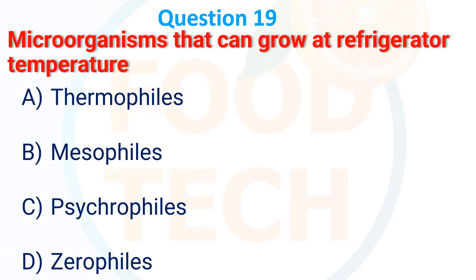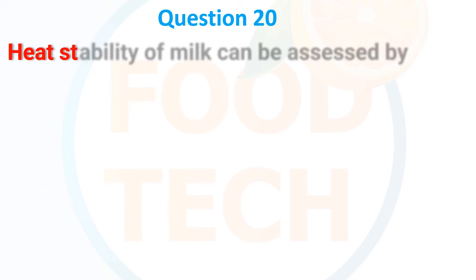Next MCQ: Microorganisms that can grow at refrigerator temperature are called what? Options: (A) Thermophiles, (B) Mesophiles, (C) Psychrophiles, (D) Xerophiles. The correct answer is C — psychrophiles.